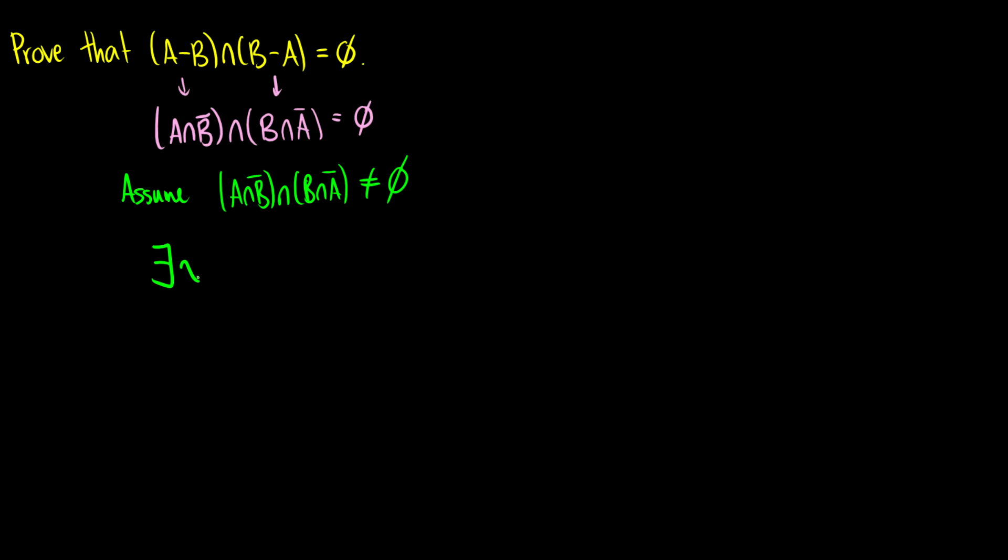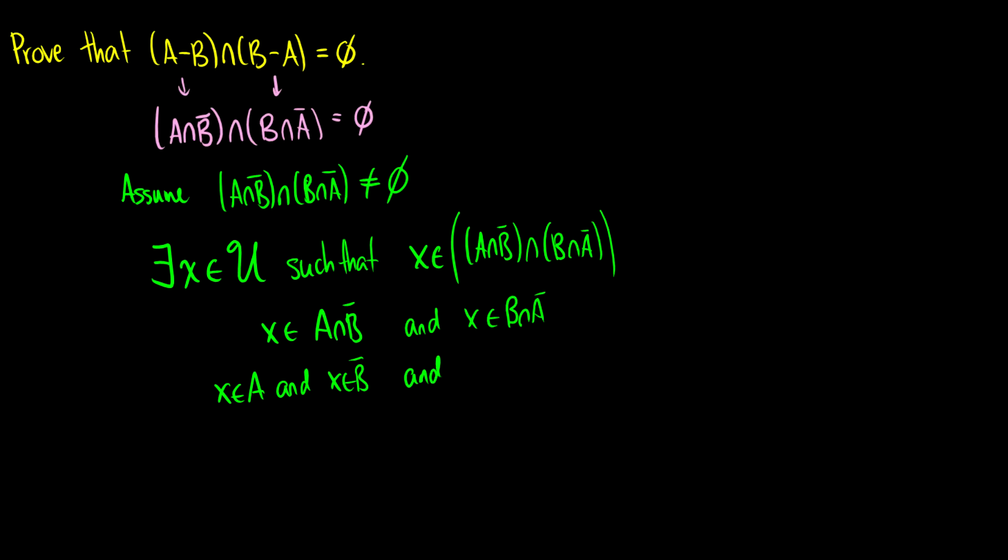Let's assume that A ∩ B̄ ∩ B ∩ Ā is not equal to the empty set. This means there's some element x in the universe such that x is in A ∩ B̄ ∩ B ∩ Ā. This means x is in A ∩ B̄ and x is in B ∩ Ā. We can break these up further: x is in A and x is in B̄, and x is in B and x is in Ā. If x is in B̄, then x is not in B. If x is in Ā, then x is not in A.